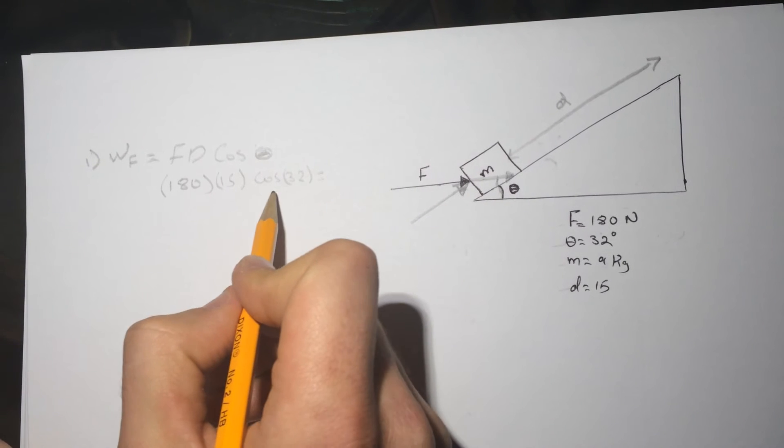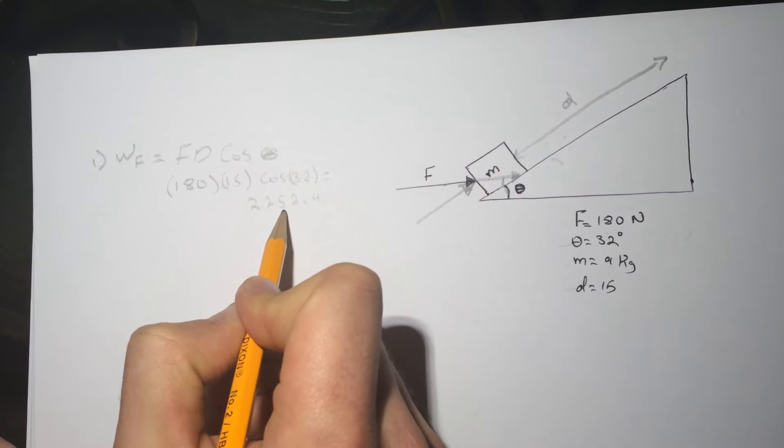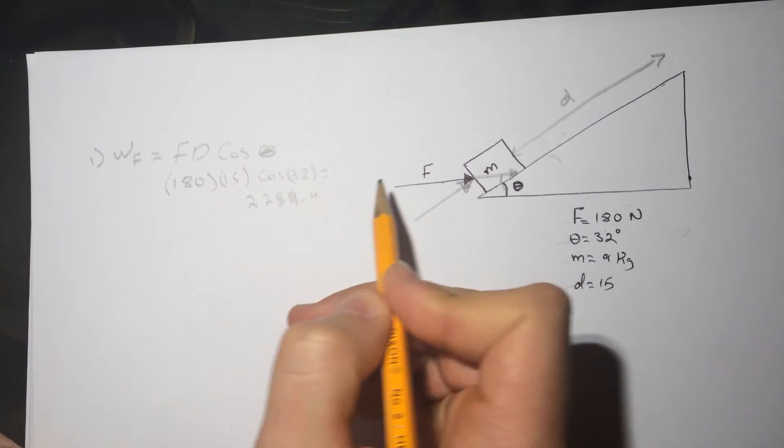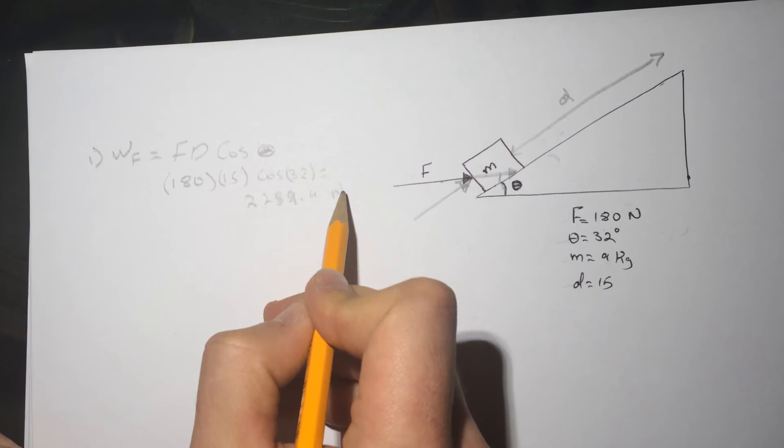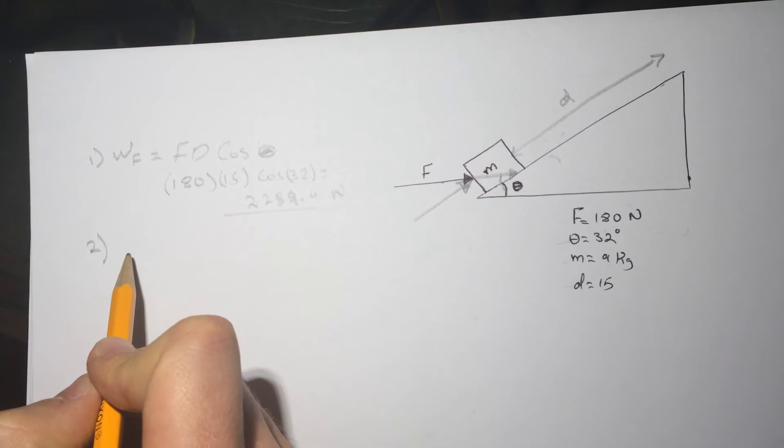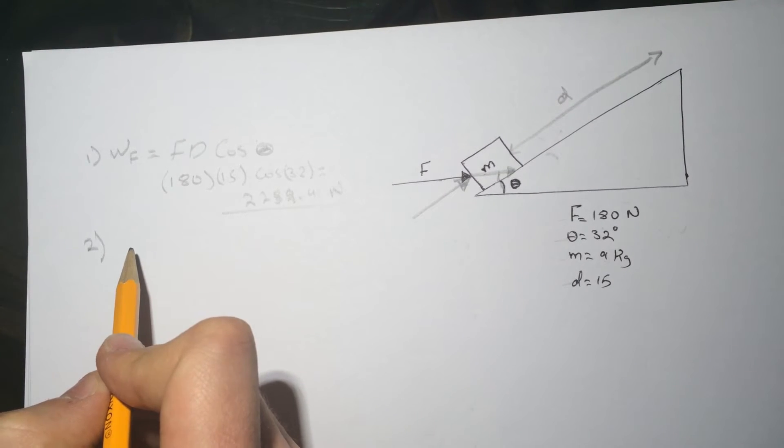You should get 2252.4 or some equivalent number, maybe 89 or something. Anyway, this is Newton. All right, so number two is asking how much work is done on the box by the gravitational force during the same displacement.